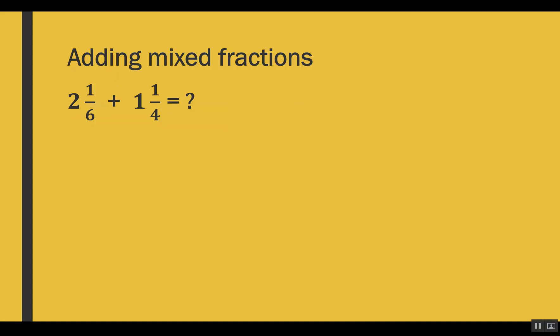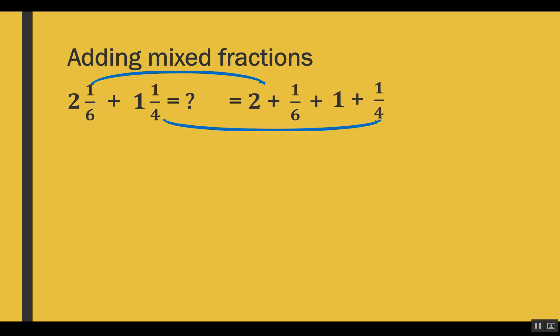Let's look at these fractions one by one. For the first fraction, the whole number is 2 and the proper fraction is 1 out of 6. Similarly, for the second fraction, we get 1 as the whole number and 1 out of 4 as the proper fraction. We will make a group of the whole numbers and a group of the proper fractions, so we get 2 plus 1 and 1 out of 6 plus 1 out of 4.